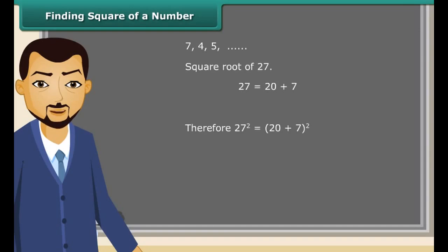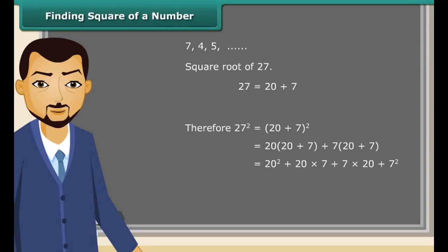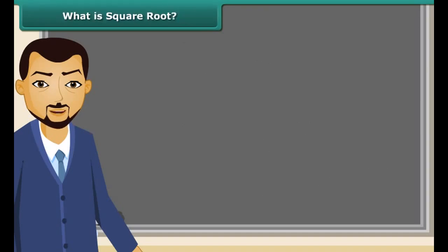So (20 + 7)² = 20×20 + 20×7 + 7×20 + 7×7, which equals 20² + 2×(20×7) + 7², which is equal to 400 + 140 + 140 + 49, giving us 729. Square root is the inverse operation of squaring.